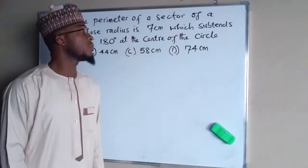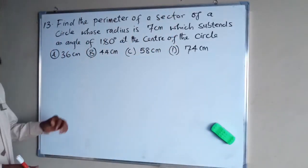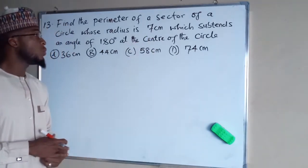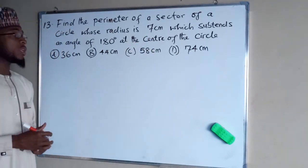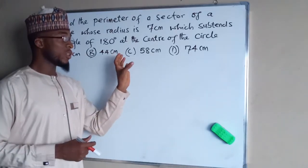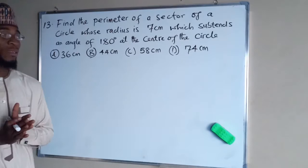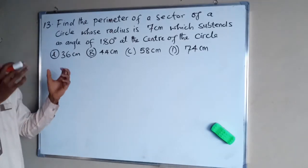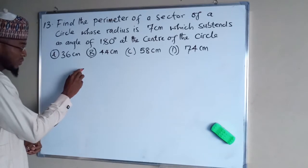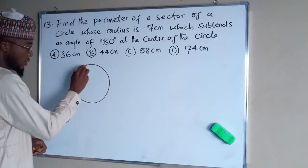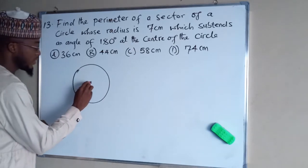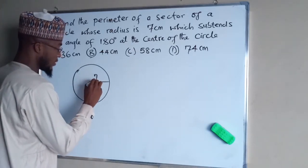In this question we are asked to find the perimeter of a sector of a circle whose radius is 7 cm, which subtends an angle of 180 degrees at the center of a circle. Before we start solving this question, it is necessary that we have a sketch of this sector. Suppose this is a circle with a center of radius 7 cm.